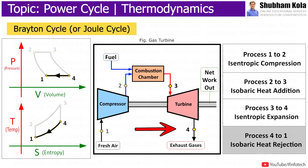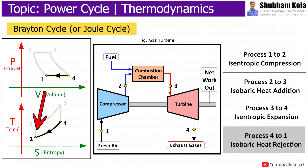Process 4 to 1 is the isobaric heat rejection process, where heat is rejected from the gas in the heat exchanger at constant pressure. Since it is a heat rejection process, the working gas temperature drops back from state 4 to state 1.